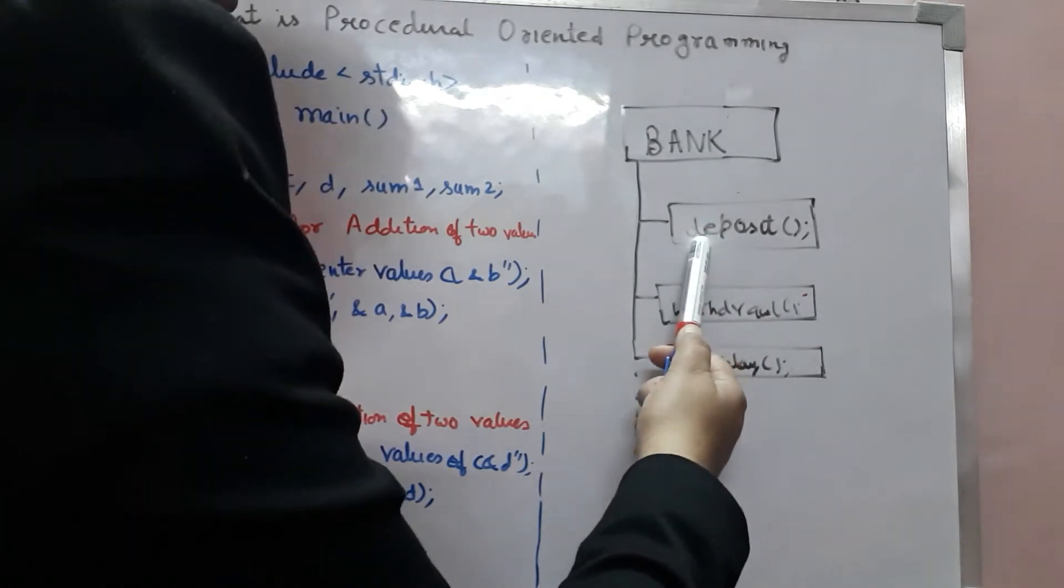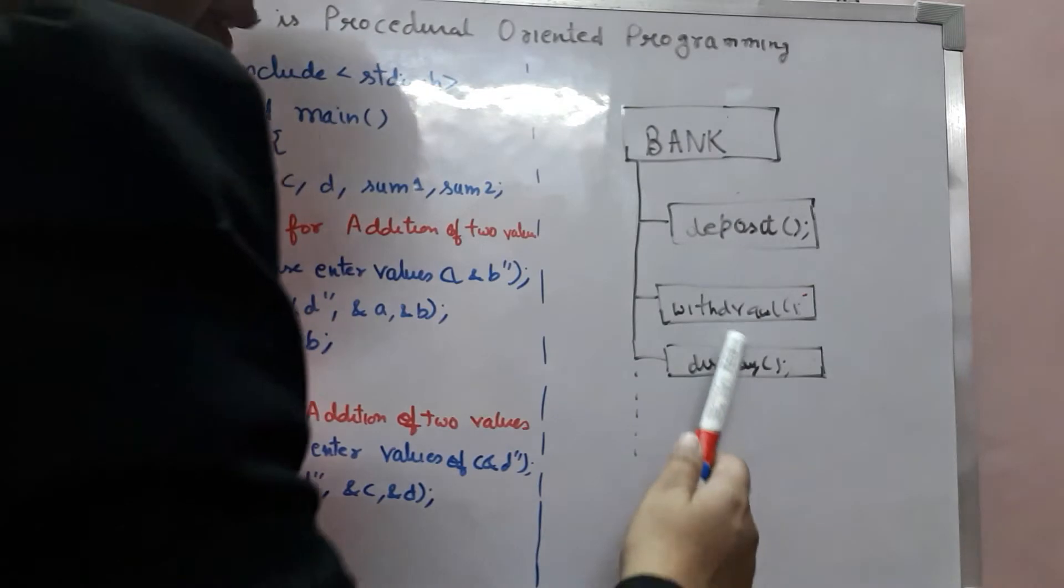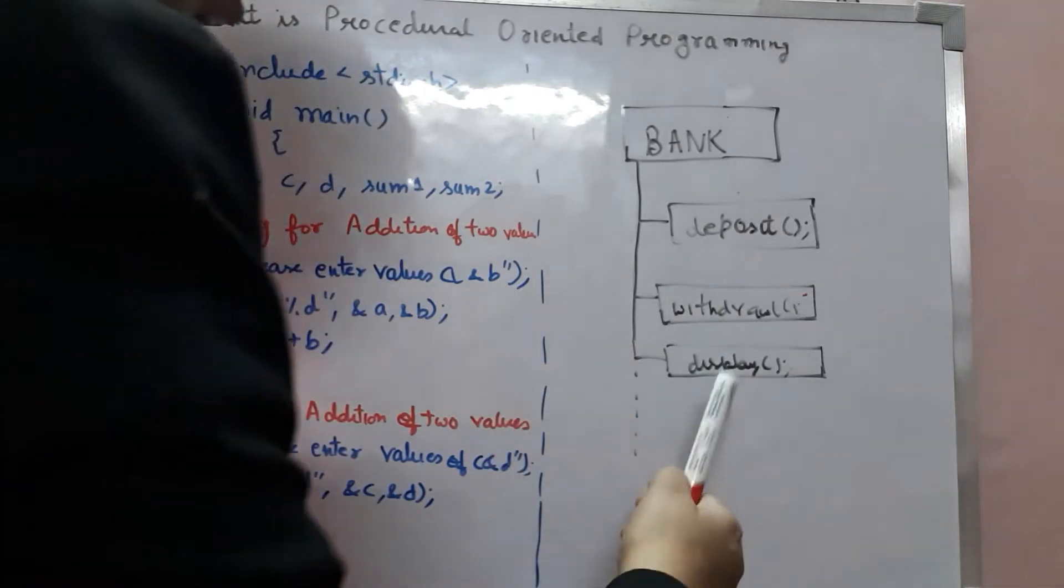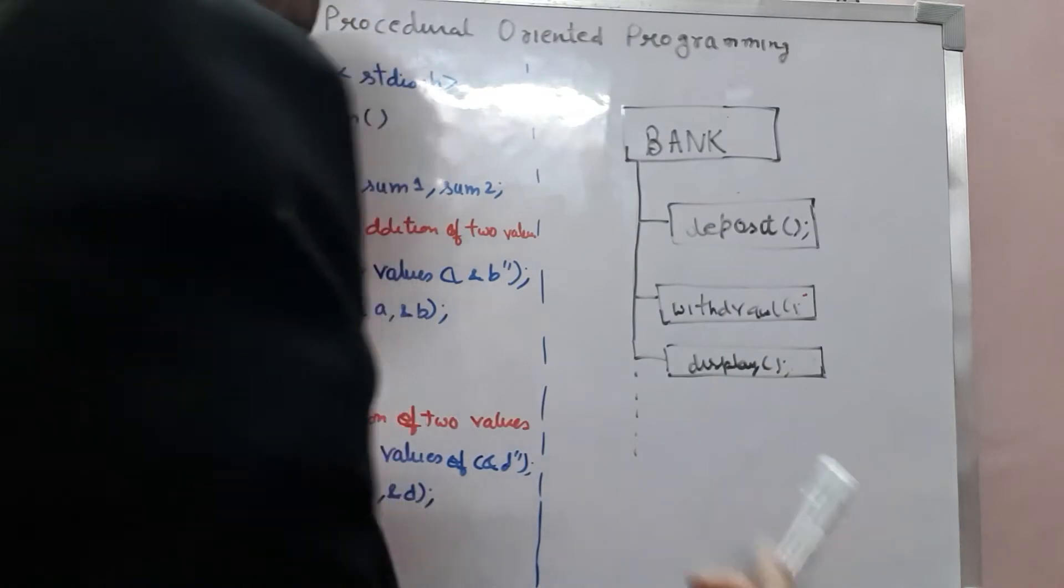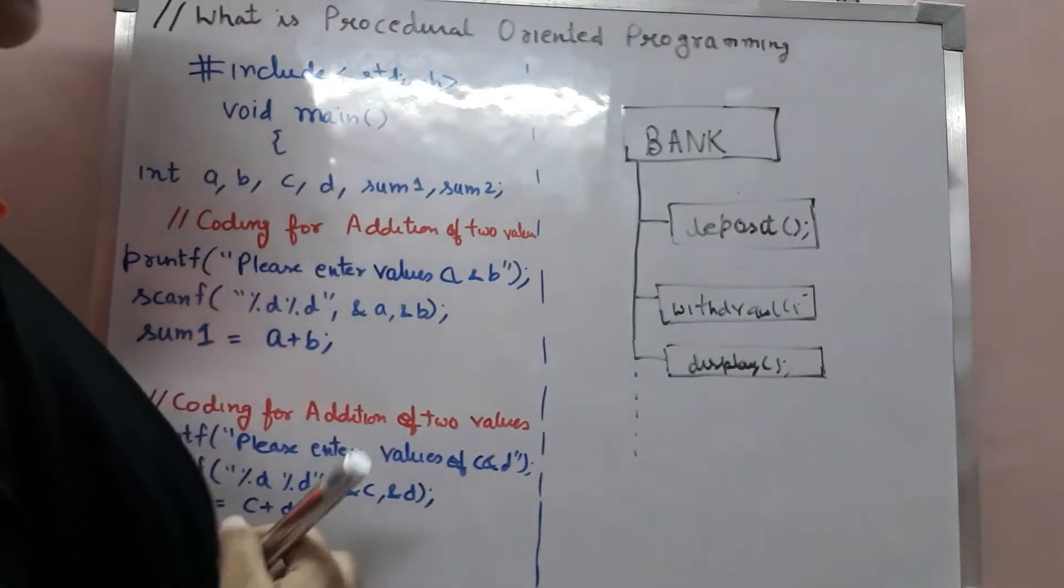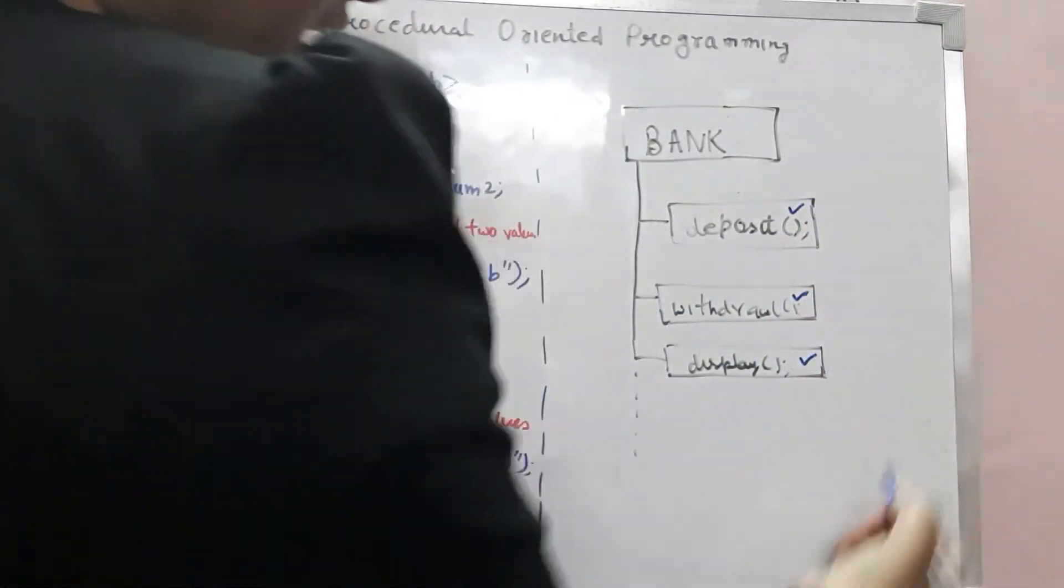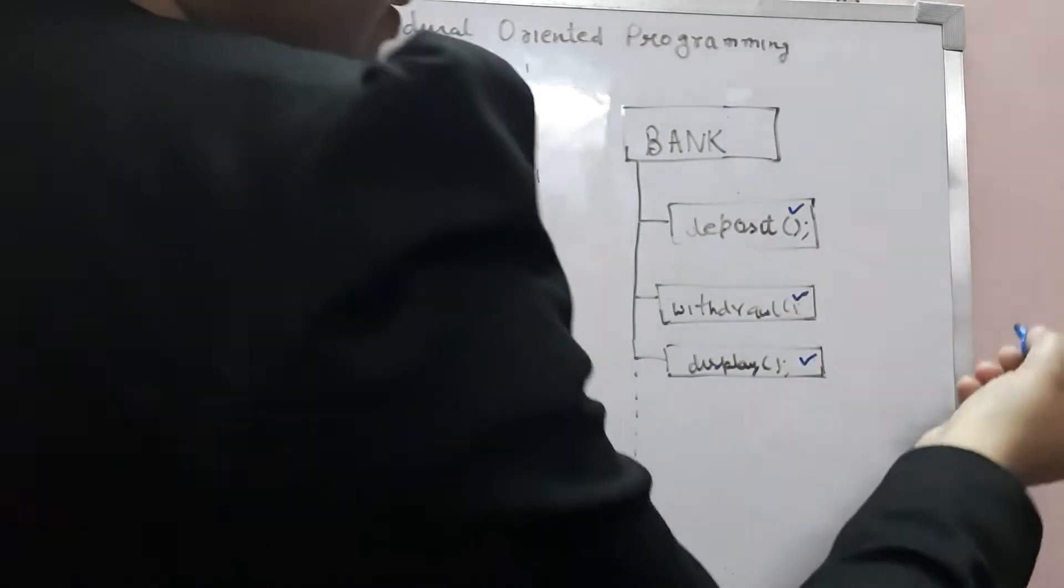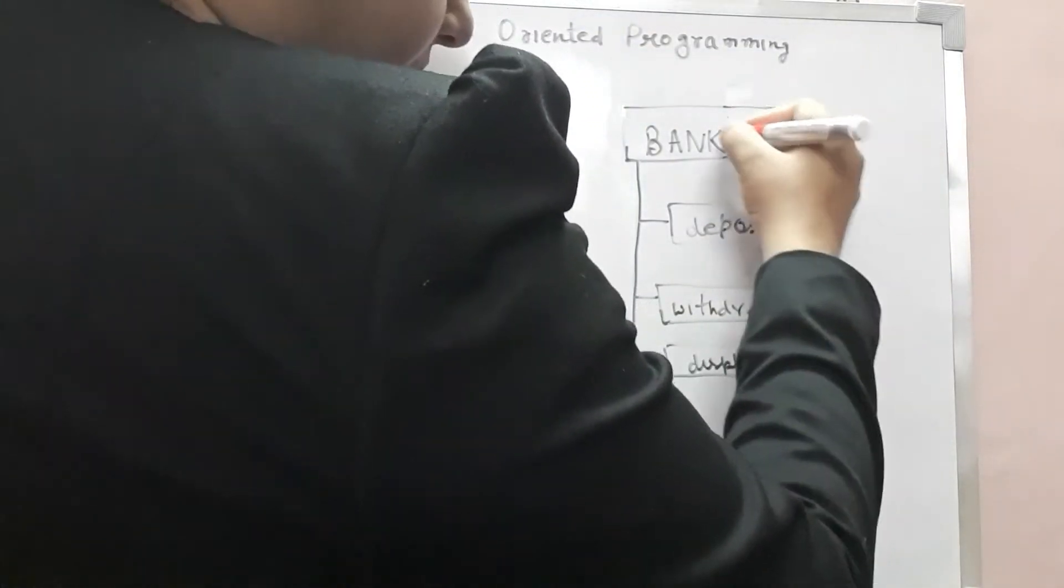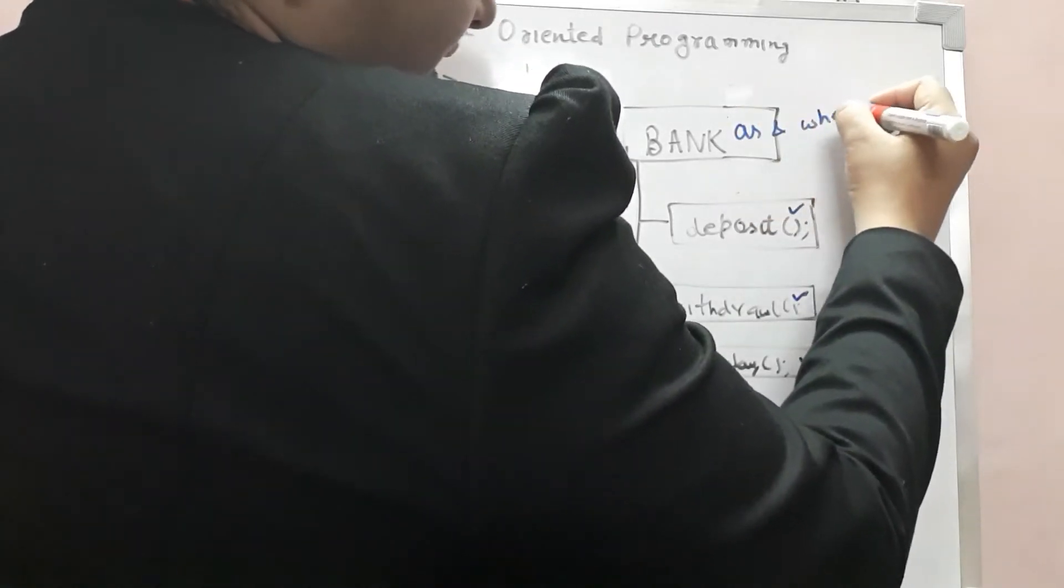Deposit function will deposit money in user's account. Withdrawal function will withdraw amount from user's account and display function will display money present in the user's account. So each function will perform its task and their services can be called in main program as and when required.